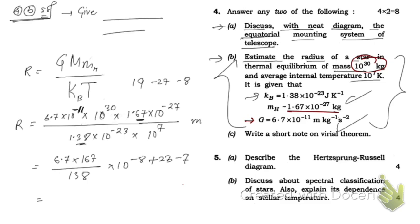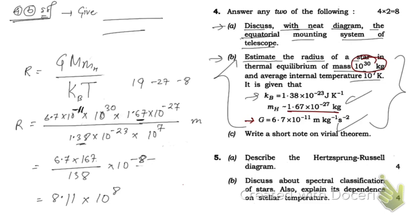Calculating the numerical part gives approximately 8.11 × 10⁸ meters. So the radius of the star is approximately 8.11 × 10⁸ meters. Make sure to work through the powers carefully: −8 + 23 − 7 gives the exponent of 8.